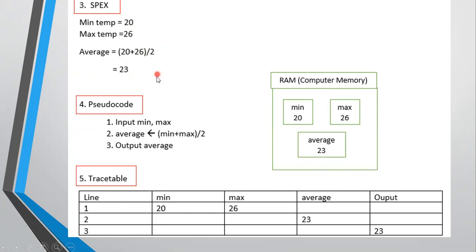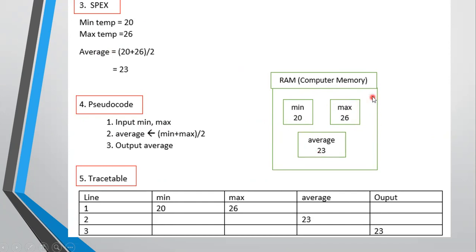Using the specific example, we can design a pseudocode. Step one: input min, max. The variables you use are called variables — these are spaces in RAM allocated for the values you input and for your calculations. When you say input min and max, there are two placeholders: one for minimum, one for maximum. The values from the specific example help you understand how memory works.